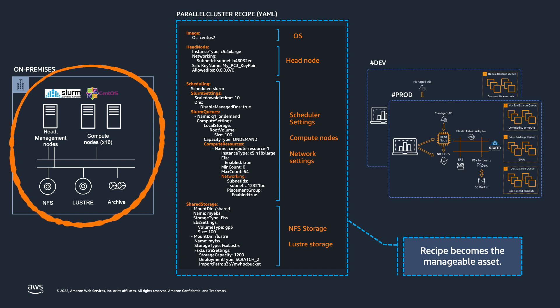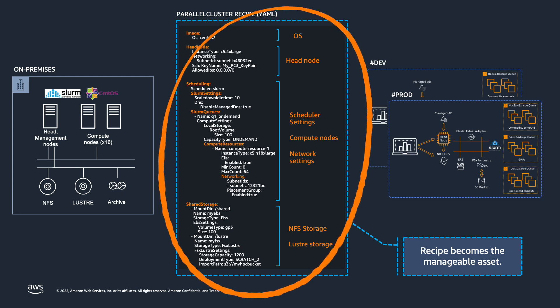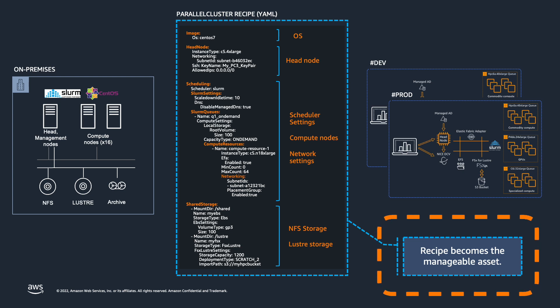If you're not familiar with ParallelCluster, on the left is your conceptual model for a cluster — either something you've dreamed up or a physical design you want to emulate. You define the various components: the operating system, the head node, the scheduler settings, network, even your shared storage — NFS, Lustre, ZFS, etc. You define these in a structured document that works with ParallelCluster to deploy and manage your clusters on AWS. The key thing is that this file is your source of truth — if it shows up in the file, the expectation is that it shows up in the cluster.